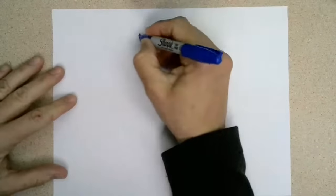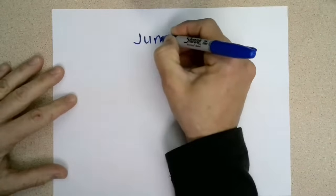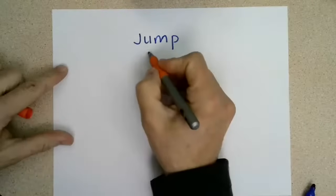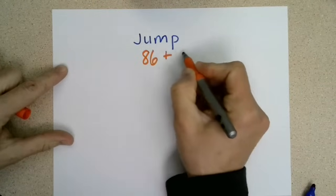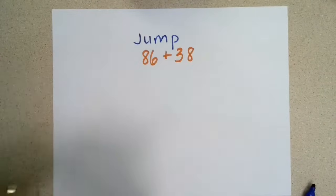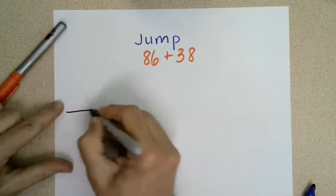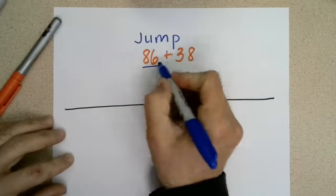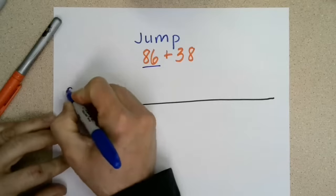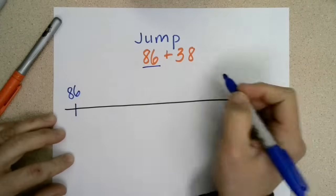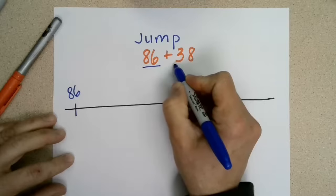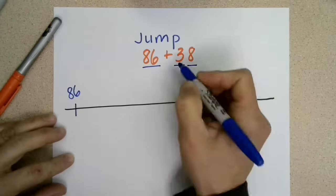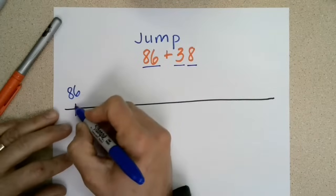In this example we're going to use the jump strategy to solve 86 plus 38. First, I need to draw a number line on my page. I'm going to start with the larger number so I don't have to jump as far. I'll look at the number I'm jumping — I can see that I have three tens and eight ones.